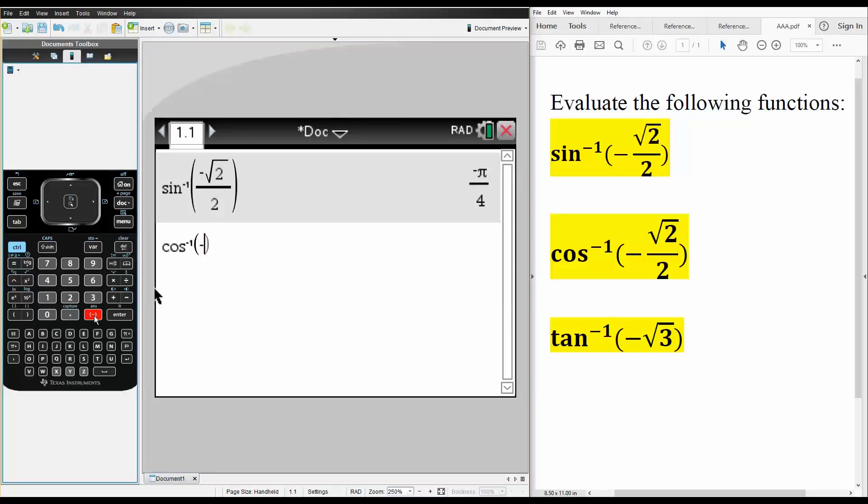so this negative sign right here, control division, the square root of 2, divided by 2, we hit enter, and this is what we get.